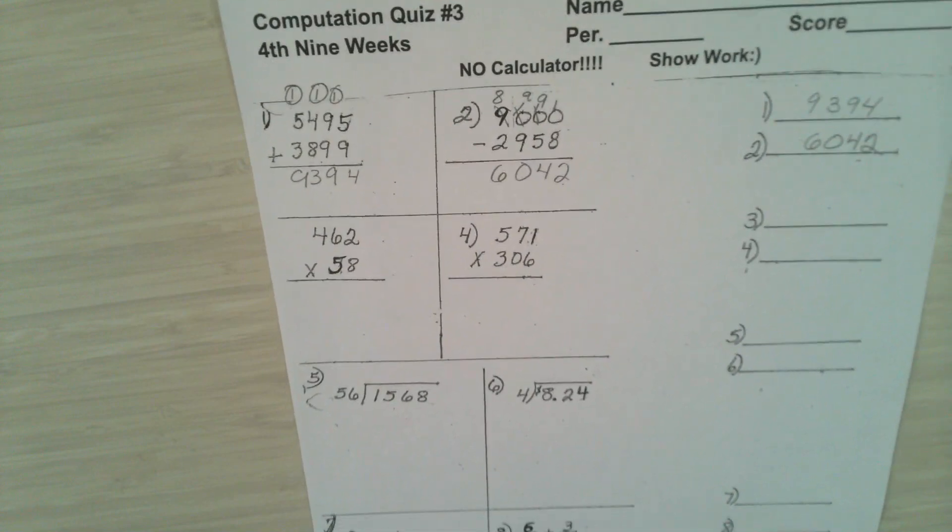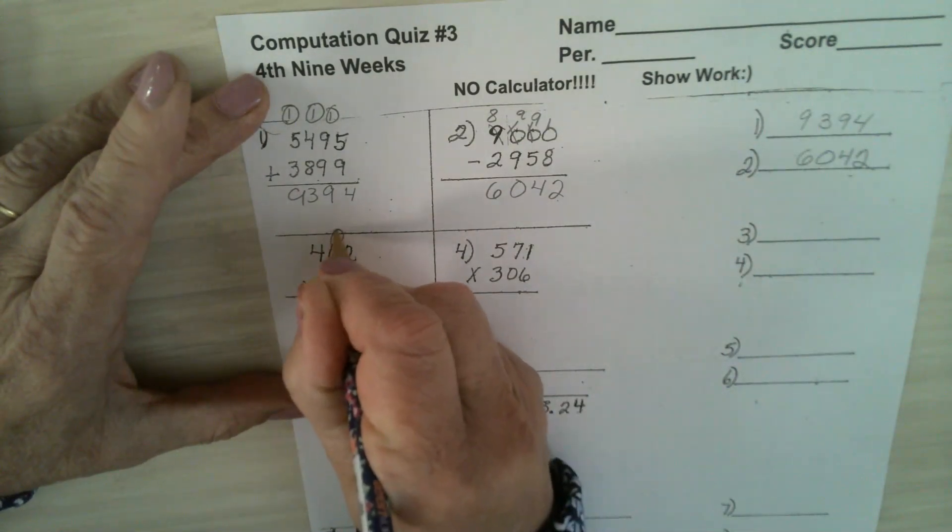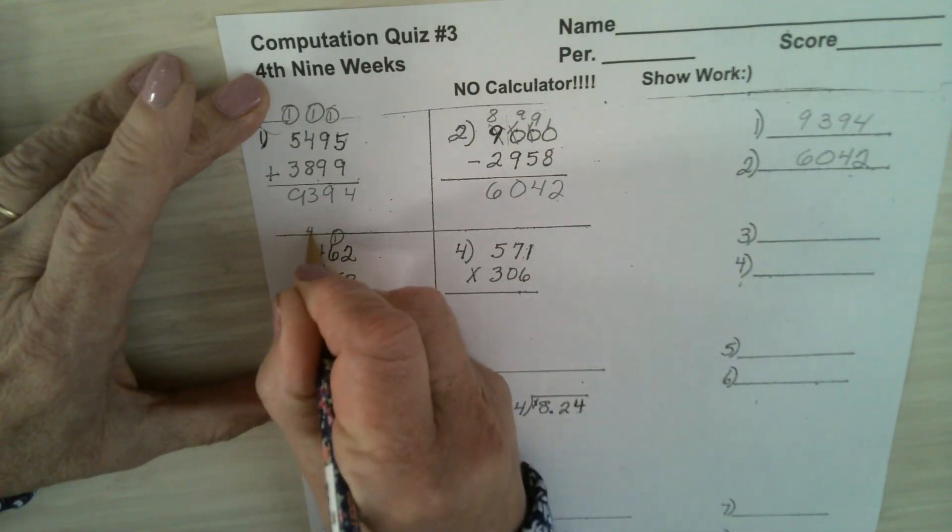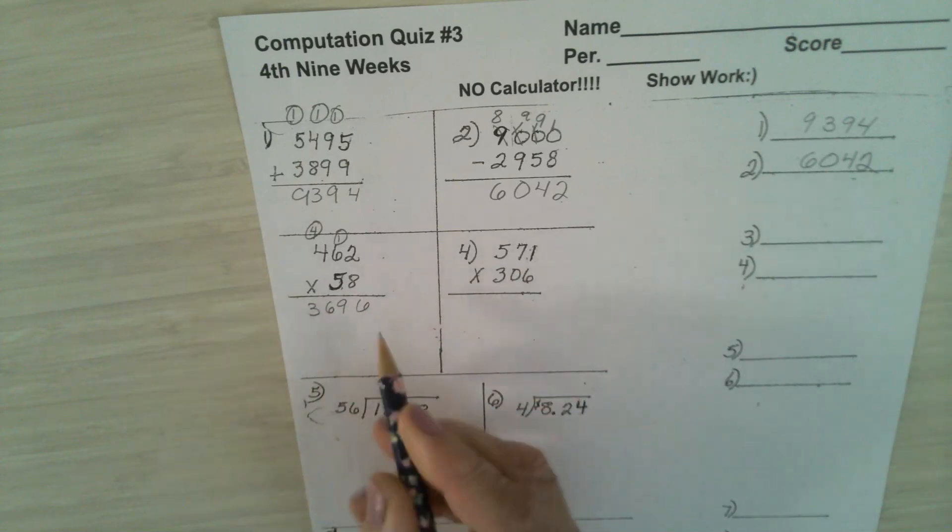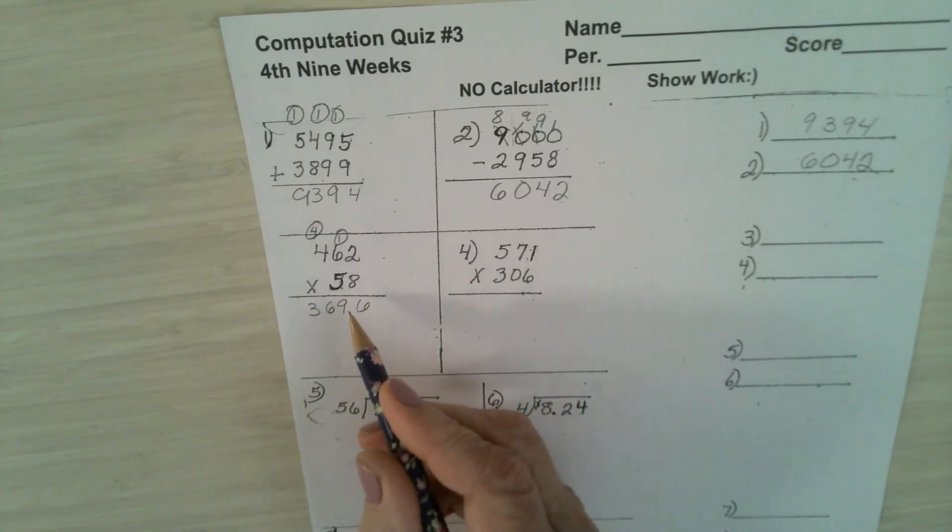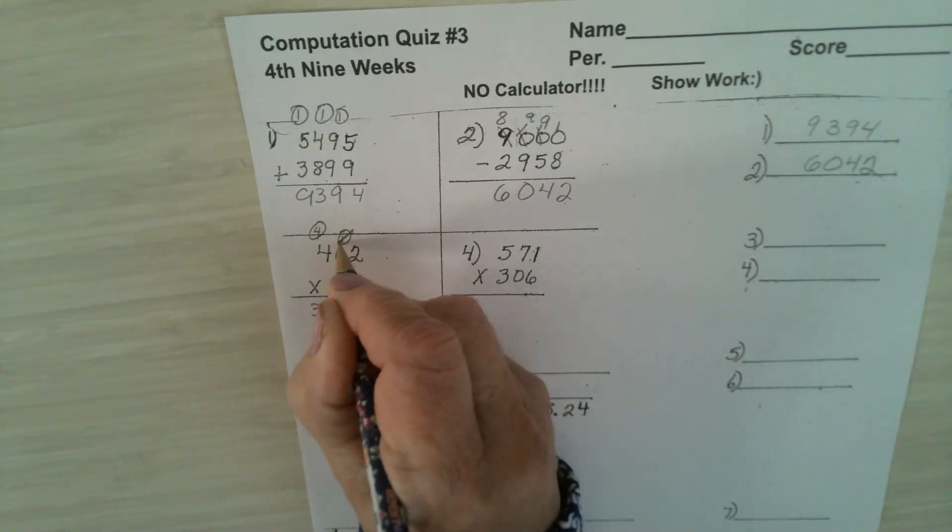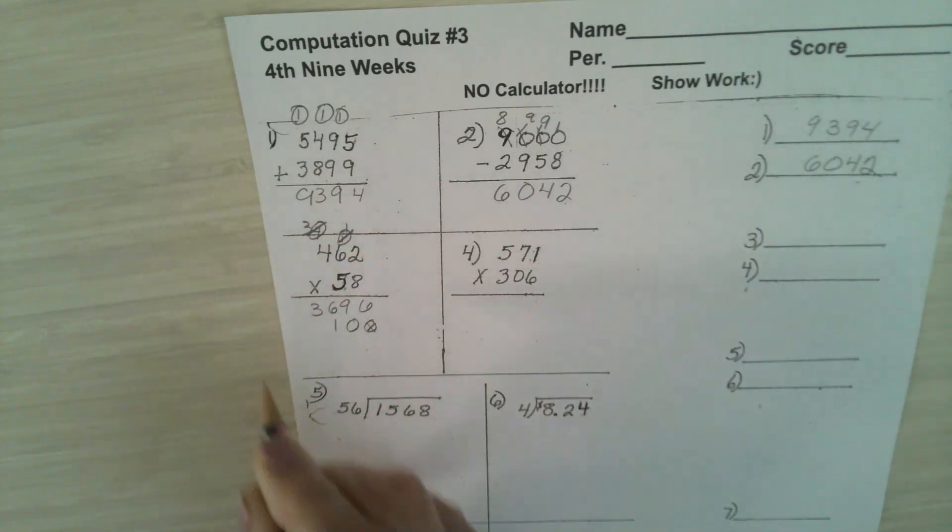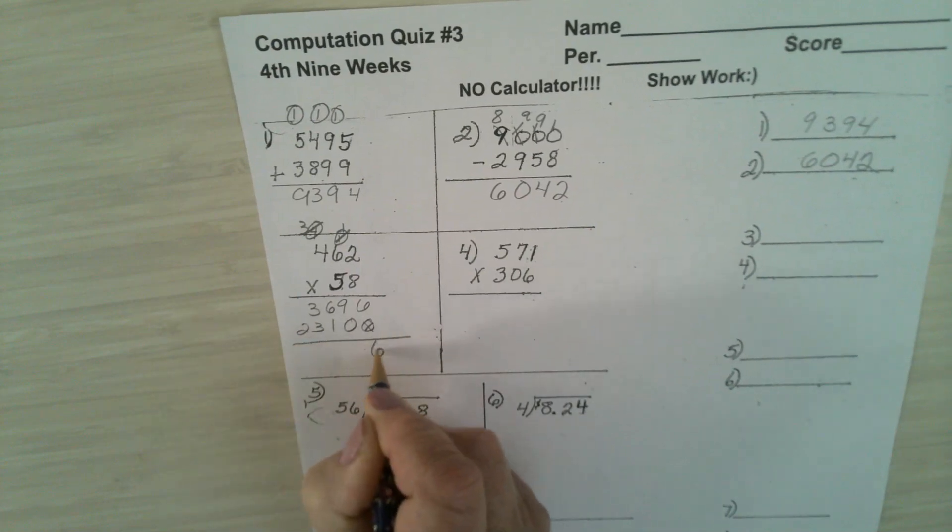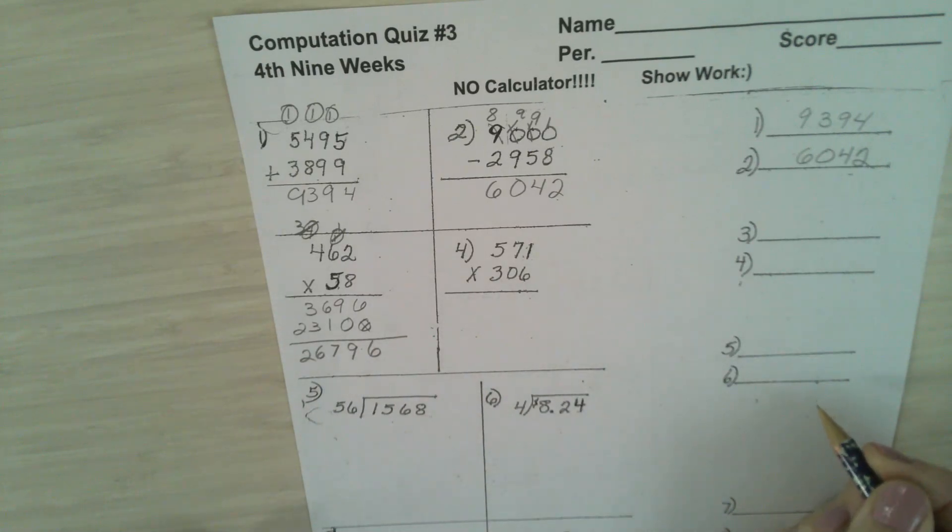Problem number three, you multiply first by the 8. 8 times 2 is 16, carry a 1. 6 times 8 is 48, plus 1 is 49. Put down a 9, carry a 4. 8 times 4 is 32, plus 4 is 36. You're going to multiply by the 5, but there's one number after the 5. Add a place value 0. Now multiply by the 5. 5 times 2 is 10, put down a 0, carry a 1. 5 times 6 is 30, plus 1 is 31. Put down a 1, carry a 3. 5 times 4 is 20, plus 3 is 23. Add the numbers together, and you have 26,796.